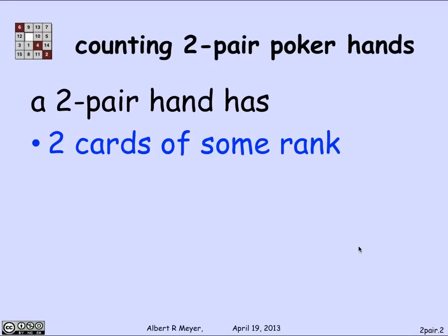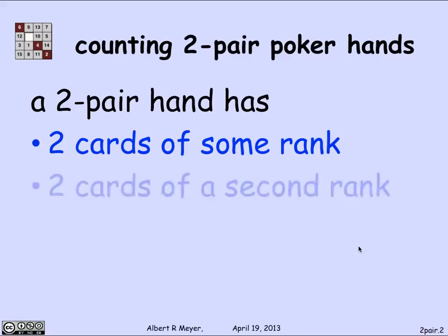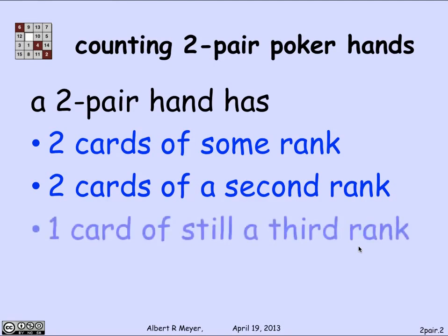Ace is one, two, three, up through ten, then jack, queen, king — eleven, twelve, thirteen. So there are thirteen possible ranks. We're going to choose two cards of some rank — that's called a pair. Then two cards of a different rank for the second pair. Finally, one card of a third rank. That gives us a pair, another pair, and a fifth card that does not match either of the first two ranks — that is the definition of a two-pair hand.